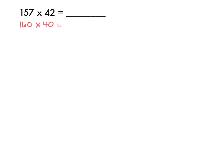So 160 times 40, 16 times 4 is 64, so 160 times 40 is about 6,400. So I'm estimating that my answer is going to be close to that. Now I'm going to solve the problem using partial products.